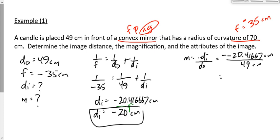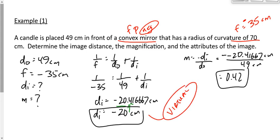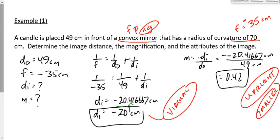Then M = -D_I / D_O = -(-20.4167) / 49 = +0.42. D_I is negative, which tells us the image is virtual. M is positive, which tells us the image is upright. M is less than one, which tells us the image is smaller. Alternatively, since it's a diverging mirror, you already know the attributes are smaller, upright, and virtual — if you remember the patterns, you never even have to do that last step.